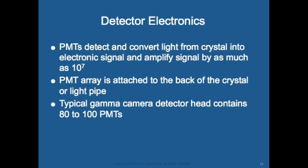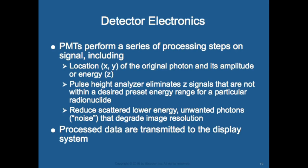The photomultiplier tubes (PMTs) detect and convert light from crystals to an electronic signal and amplify the signal by as much as 10 to the seventh. PMT arrays are attached to the back of the crystals or light pipe, and a typical gamma camera detector head contains 80 to 100 PMTs. PMTs determine the location (X and Y) of the original photon and its amplitude or energy (the Z pulse). A pulse height analyzer eliminates Z signals not within the desired preset energy range for a particular radionuclide.